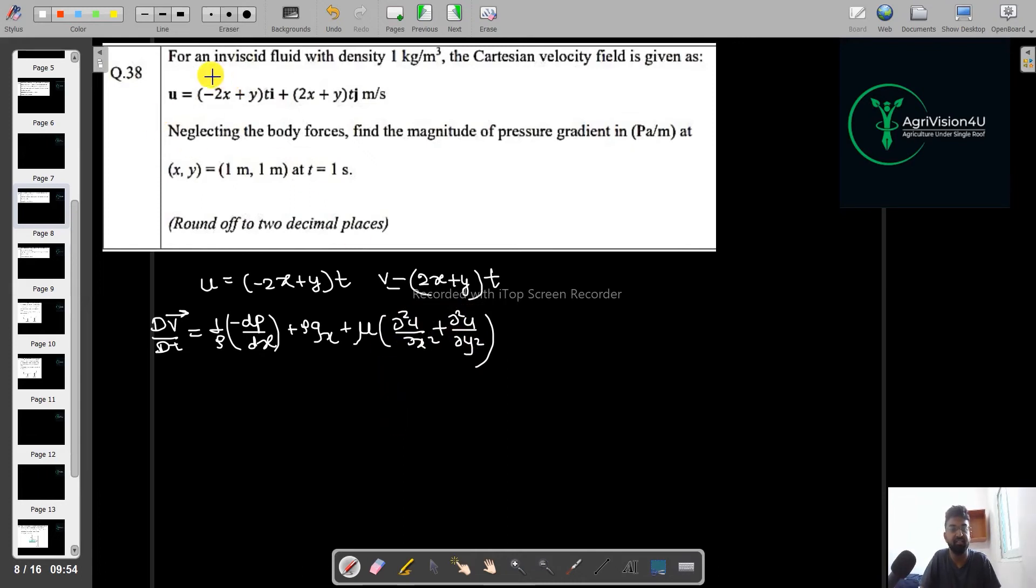Since in the question it is given as for an inviscid fluid, for an inviscid, you can say that this term will become zero. Again, they told neglecting the body forces, so please neglect the body force here. Then you will have this term. You can simply write it as equals to rho into this is the acceleration. And in the given question, it is given that 1 kg per meter cube will be the density of a fluid. So that's why you can directly tell that this will become 1 and you will have only this term. So the pressure gradient will be equal to nothing but the acceleration of the fluid.